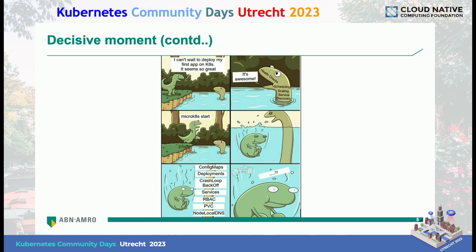When Kubernetes came into the picture, most engineers were like 'I want to learn Kubernetes, it's so new in the market.' The moment they start learning it, they see the first few things — health checks, scheduling, service discovery — and think 'let me start deploying my first application.' But once they deep dive into it, they encounter config maps, services, RBAC, and more. They're like, 'Okay, where am I now?' This is exactly the feeling we had in the teams we were going to help with migration, because there were hardly one or two engineers who had Kubernetes knowledge.